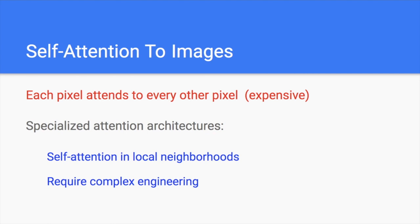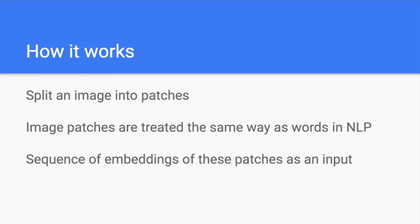So let's look at how the Vision Transformer works. By the way, they call this transformer used to process images the Vision Transformer. First, they split an image into patches. Those patches are treated the same way as words or tokens in natural language processing.